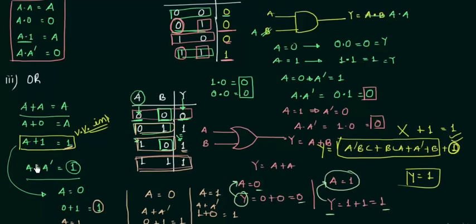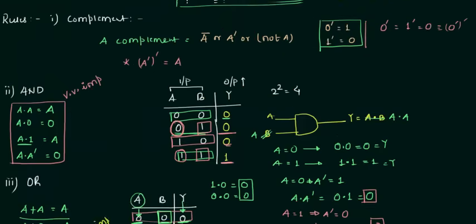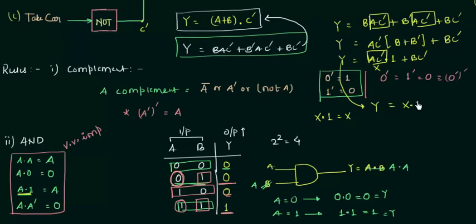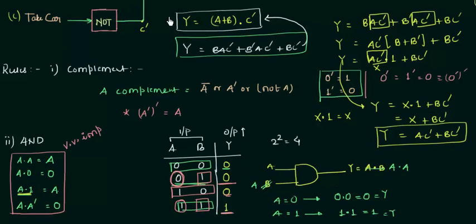From the OR rule, a AND 1 = a. So if we call ac' = x, then y = x AND 1 OR bc' = x OR bc' = ac' OR bc'. These two terms are equal to our target. Optionally applying the distributive law, ac' OR bc' = (a OR b) AND c', which confirms our simplified result.